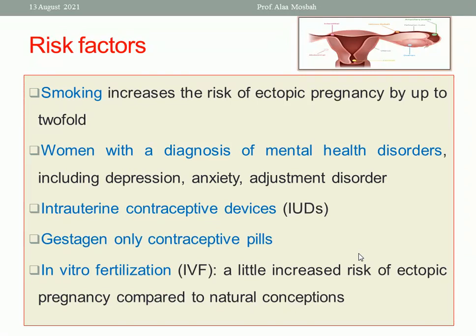Women with mental health problems including anxiety and depression — possibly due to the disease itself, hormonal effects, or medications — may have affected tubal motility. An intrauterine device in place with a pregnancy is a risk factor for ectopic, as the IUD prevents intrauterine pregnancy but not extrauterine. Progestogen-only contraceptive pills and in vitro fertilization are also associated with a slightly increased risk.